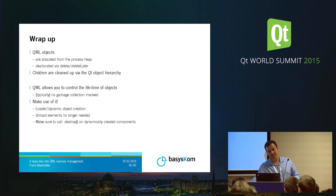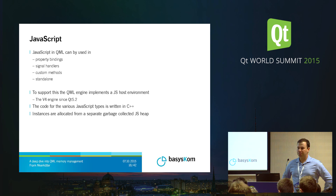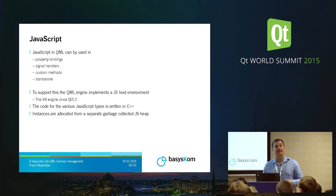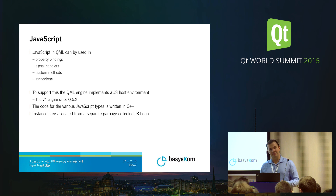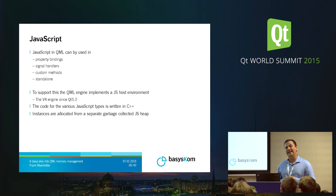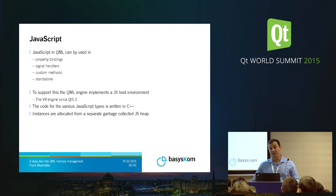This brings us to the JavaScript side. JavaScript can be used in property bindings, signal handlers, custom methods, and standalone. To make this possible, the QML engine implements a JavaScript host environment — since Qt 5.2 this is the V4 engine; before that it was V8. This is basically what your web browser does: the browser implements a JavaScript host environment tailored to a web browser, and the QML engine implements one tailored to QML. The code for various JavaScript types is implemented in C++, but instances of these types are allocated on a separate garbage-collected heap, which we will look into in detail.